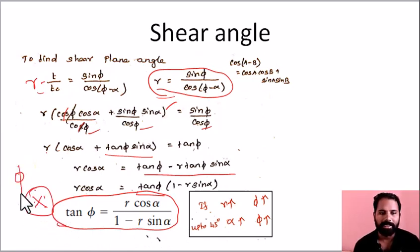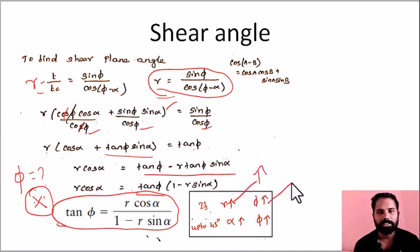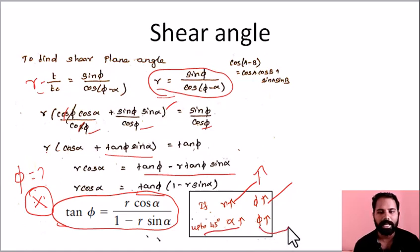If we need to find the shear plane angle, we use this equation. The shear plane angle depends on both terms: R and α. As the chip thickness ratio R increases, the shear plane angle increases. When α equals 45 degrees, the rake angle is increased.